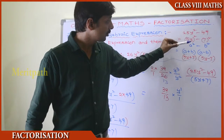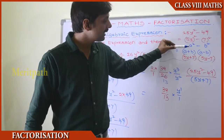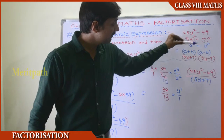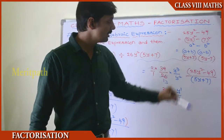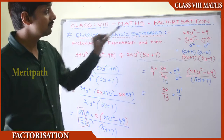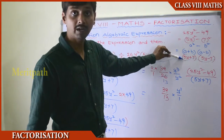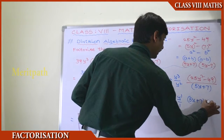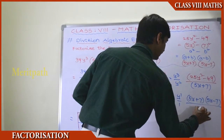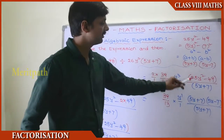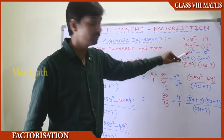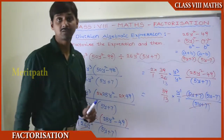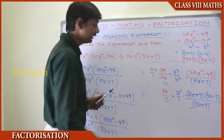So 25y² − 49 = (5y)² − 7², which is in the form a² − b², and it can be written as (a + b)(a − b). Here a = 5y and b = 7, so it becomes (5y + 7)(5y − 7). We understood that 25y² − 49 = (5y + 7)(5y − 7).